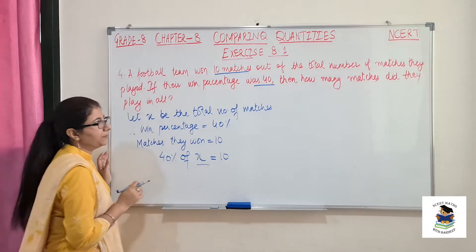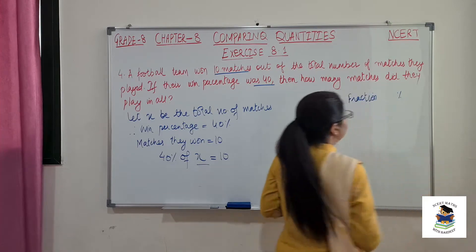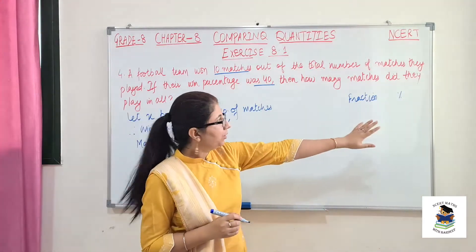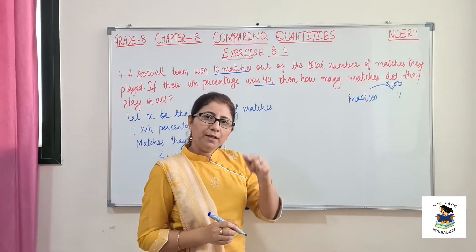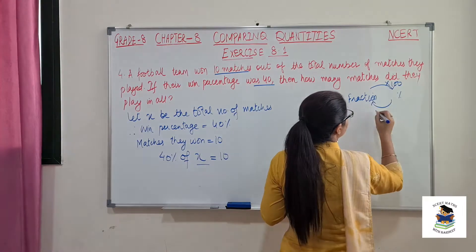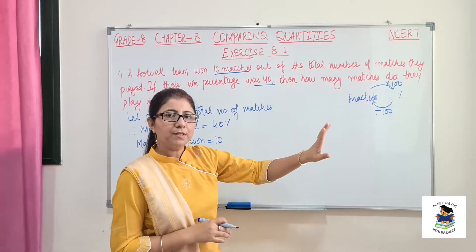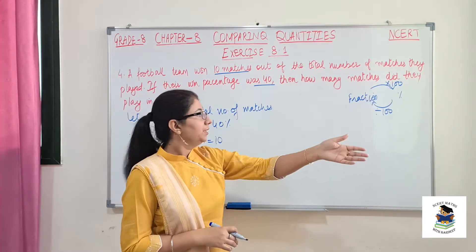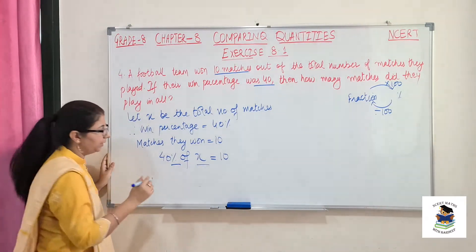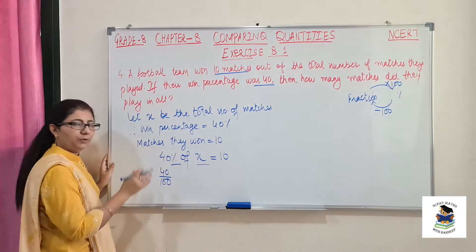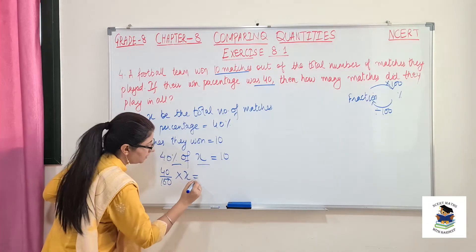One important point: whenever you have a fraction and you have to convert it into percentage, you multiply by 100. When a percentage is given and you have to convert it into a fraction, you divide by 100. So whenever we have a percentage sign, just divide it by 100. So 40% means 40 over 100.